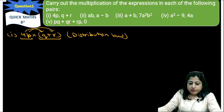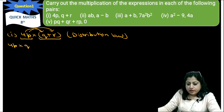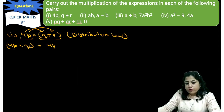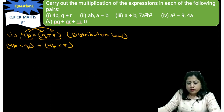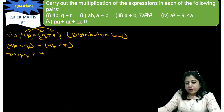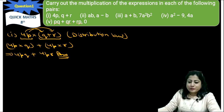According to the distributive law, 4p will multiply with q, plus 4p will multiply with r. So the answer will be 4pq + 4pr. This is the required solution.